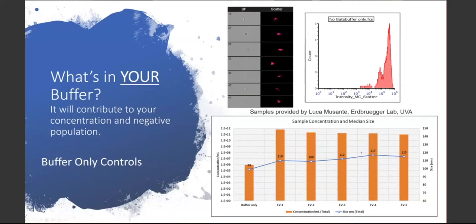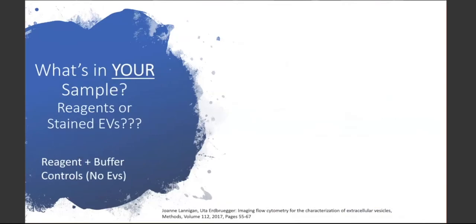It's really important to establish what is in your buffer, because this will contribute to not only your concentration but your negative population. We don't suggest reporting percentages because the background could differ from sample to sample and could contribute to a different denominator for calculating percentages. It's really important to understand concentration-wise what is in your buffer — not only for total EVs but even for labeled EVs. The other important control is what's in your samples: the use of reagents and buffer control with no EVs. What part of your signal is coming from your EVs versus being contributed by the reagents only?